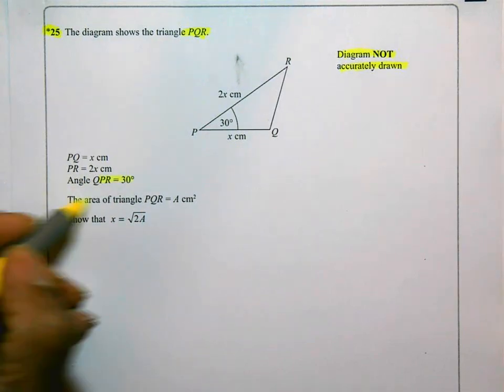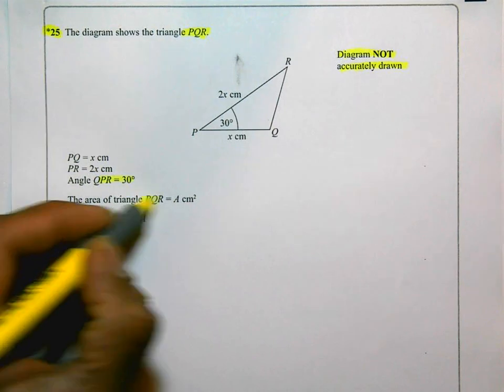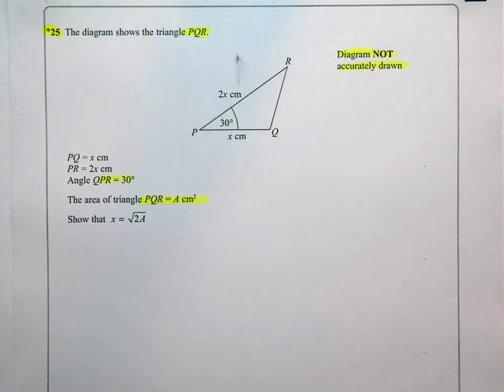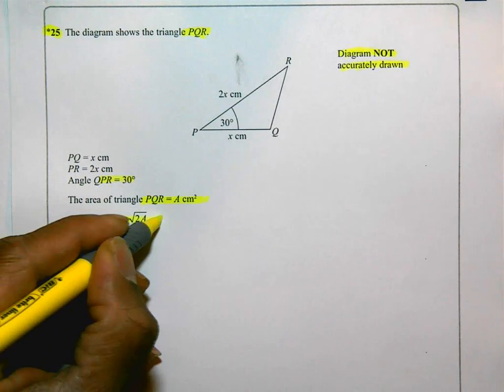The area of the triangle PQR is A centimeters squared. So the area of the triangle is A centimeters squared. And they said show that X is equal to the square root of 2A.